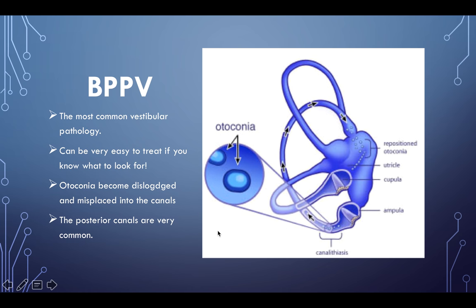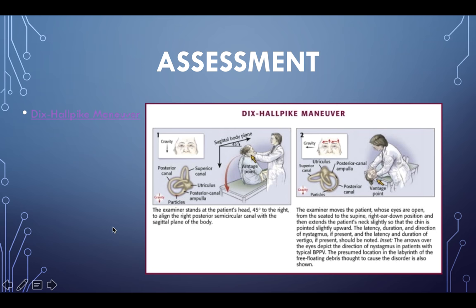BPPV is the most common vestibular pathology and can be easy to treat if you know what to look for. The theory is that otoconia — small crystals — become dislodged and misplaced into the canals, most commonly the posterior canals due to gravity. This is called canalithiasis. Patients may experience nausea, vomiting, visual disturbances, and extreme discomfort with head movement. The goal of treatment is to guide the otoconia back into the vestibular apparatus.